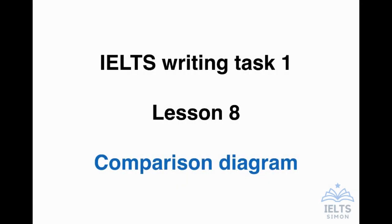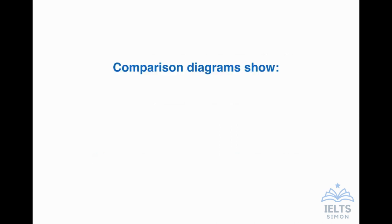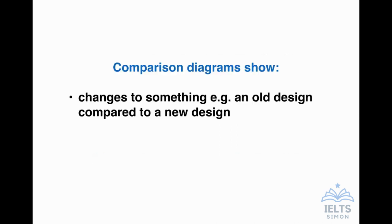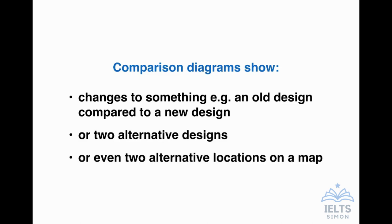IELTS Writing Task 1, Lesson 8: Comparison Diagram. Comparison diagrams show changes to something, for example an old design compared to a new design, or two alternative designs, or even two alternative locations on a map. I'm going to give you examples of these three types. We'll start with the first type: changes to something.